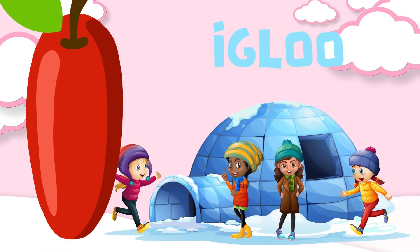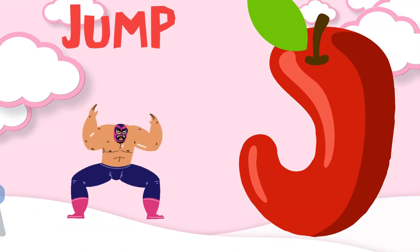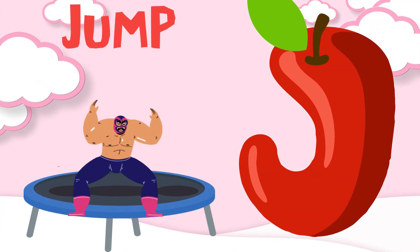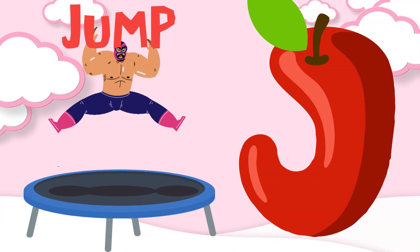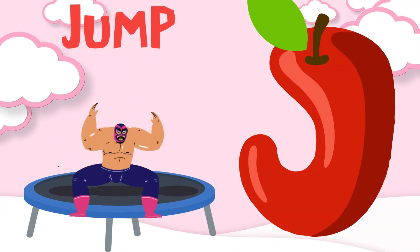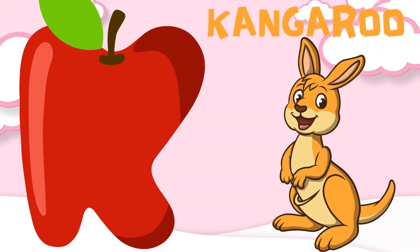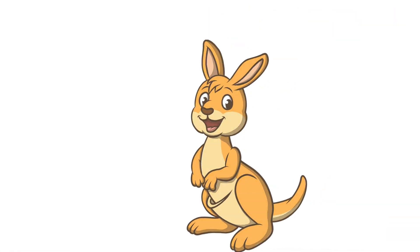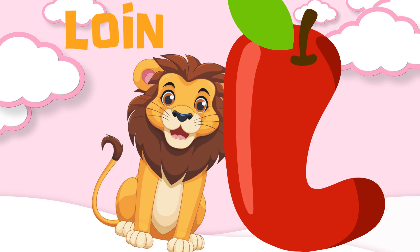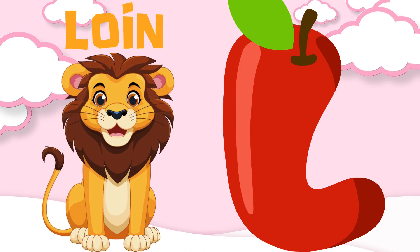I is for igloo, i-i-igloo. J is for jump, j-j-jump. K is for kangaroo, k-k-kangaroo. L is for lion, l-l-lion.